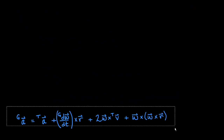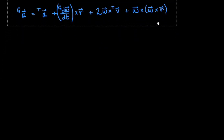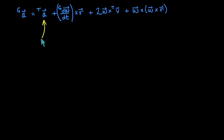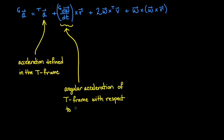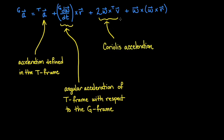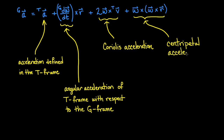Looking at this formula, the first term is the object's acceleration as observed in the T frame. The remaining terms can be thought of as giving rise to fictitious forces which cause the acceleration observed in the T frame. The second term is due to the angular acceleration of the T frame with respect to the G frame. The third term is the Coriolis acceleration — note that it depends on the velocity vector of the object in the T frame. And this last term is the centripetal acceleration, which depends on how far the object is from the axis of rotation.